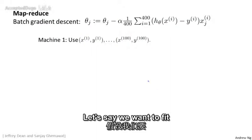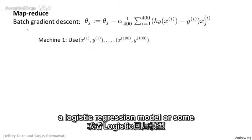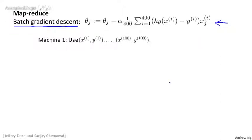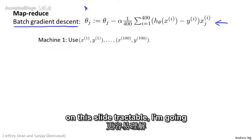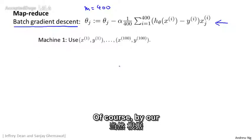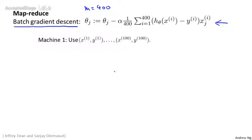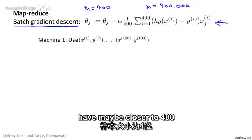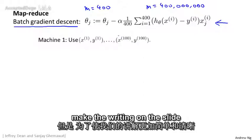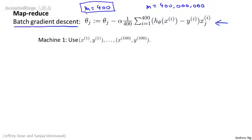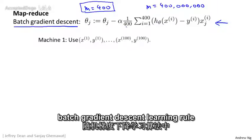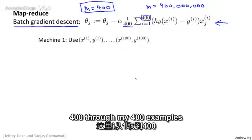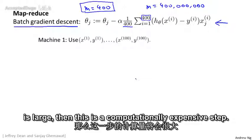Here's the idea. Let's say we want to fit a linear regression model or logistic regression model, and let's start with batch gradient descent. That's our batch gradient descent learning rule. To keep the writing tractable, I'm going to assume we have M equals 400 examples. By our standards of large-scale machine learning, M might be pretty small—this is more commonly applied to problems with maybe closer to 400 million examples. But to make the writing simpler, I'll pretend we have 400 examples. In that case, the batch gradient descent learning rule has 1 over 400 and a sum from i equals 1 through 400. And if M is large, this is a computationally expensive step.